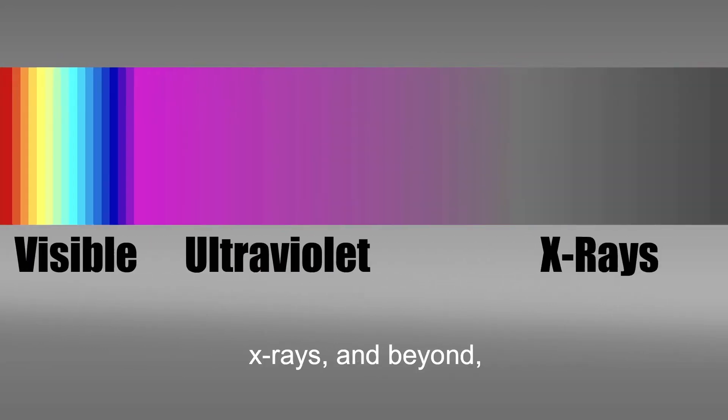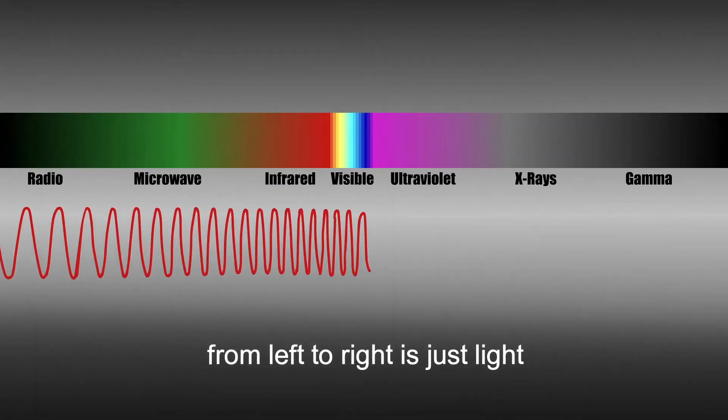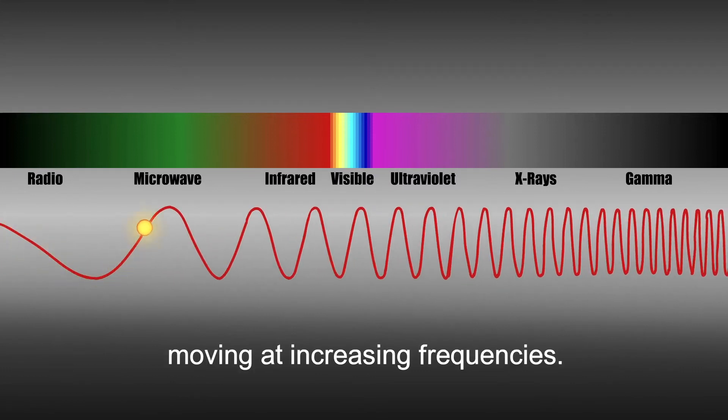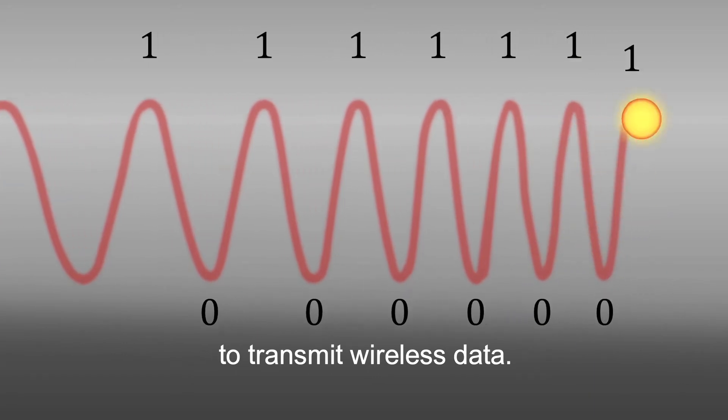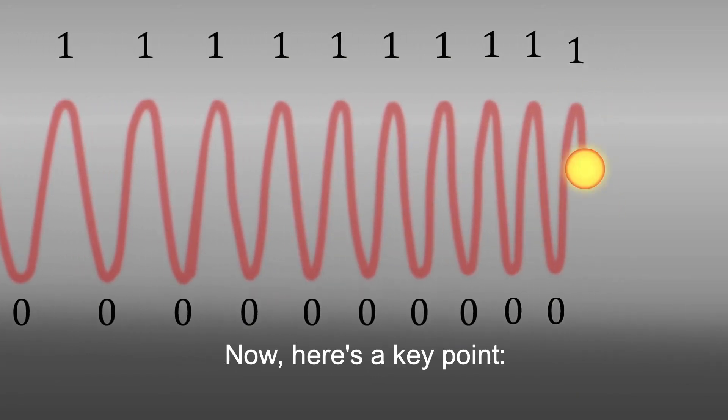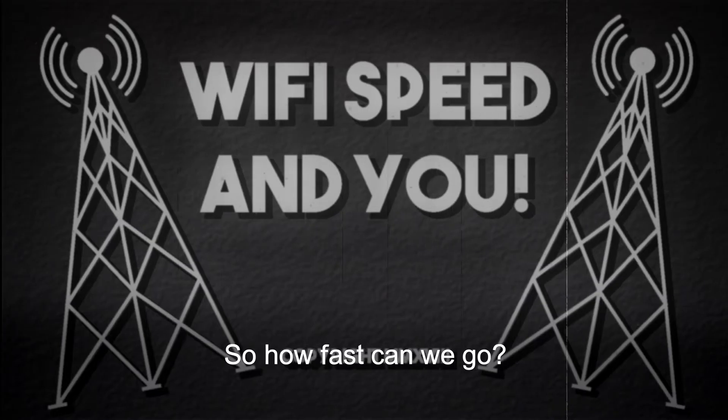Radio waves, visible light, x-rays, and beyond. Everything on the electromagnetic spectrum from left to right is just light moving at increasing frequencies. We use different frequencies of light to transmit wireless data. Now here's a key point. Higher frequencies generally mean faster wireless data speeds. So how fast can we go?